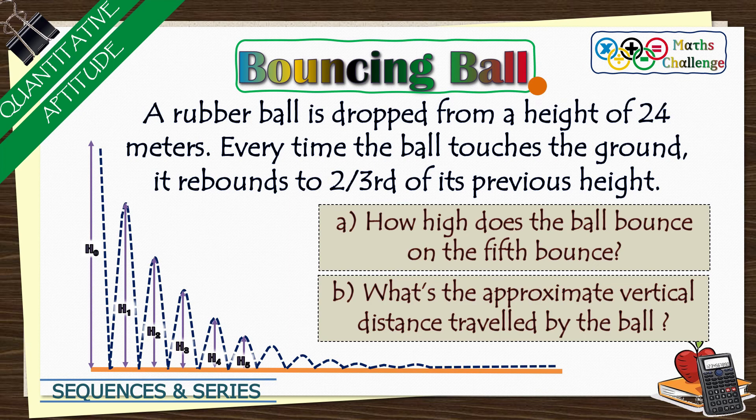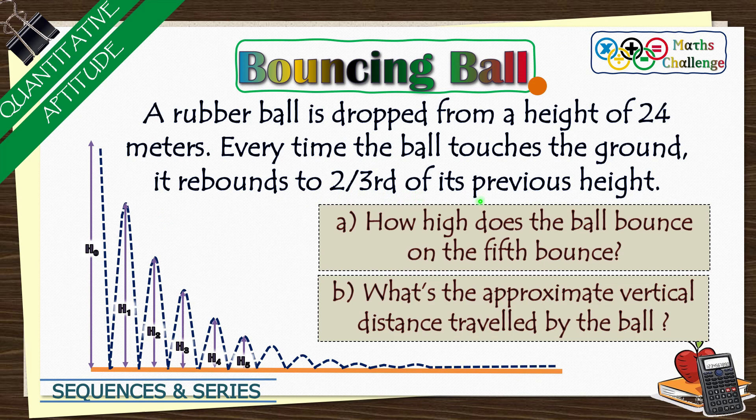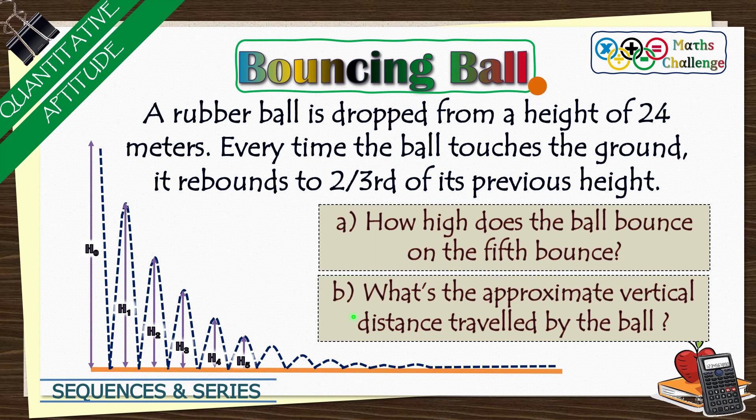The question is there on your screen. A rubber ball is dropped from a height of 24 meters. Every time the ball touches the ground, it rebounds to two-thirds of its previous height. And we are going to solve these two parts based on this question statement. So let us begin.